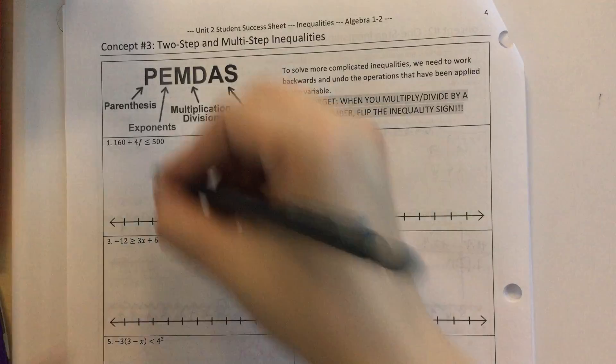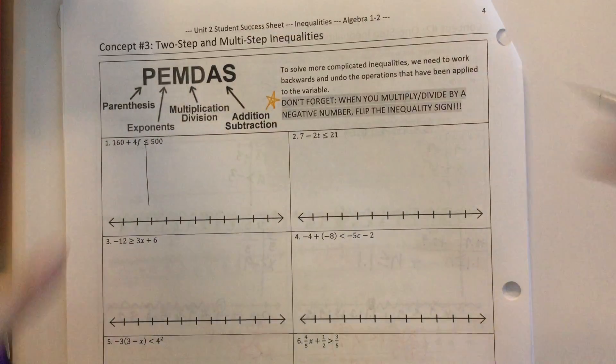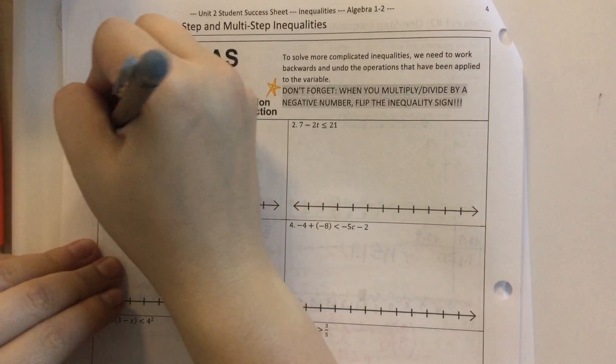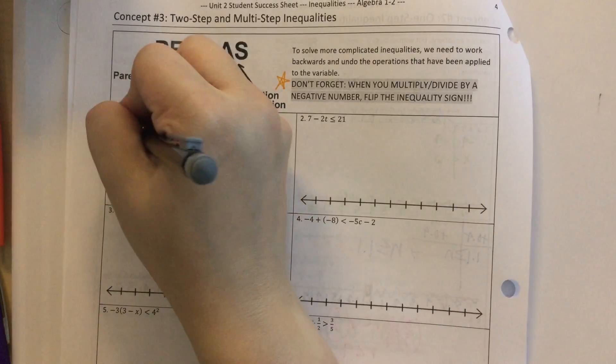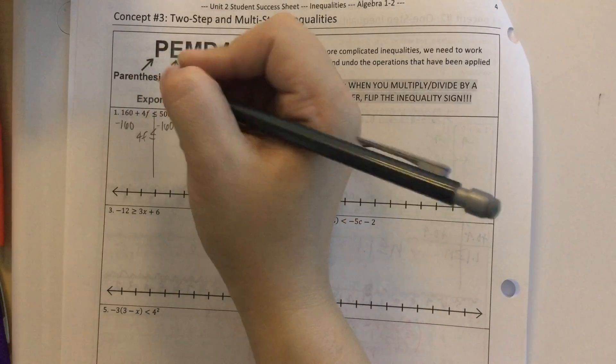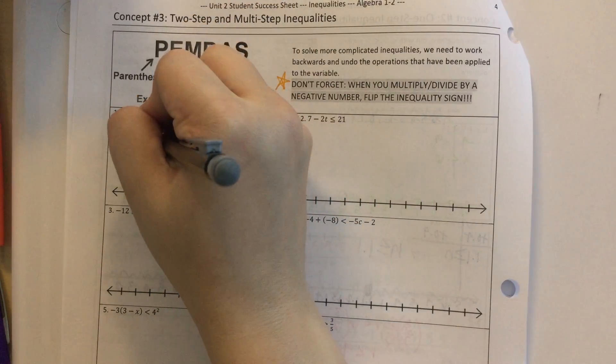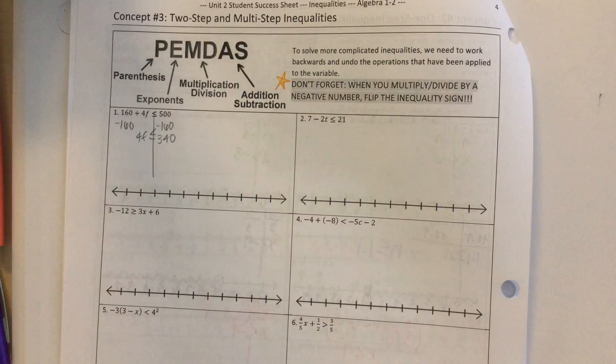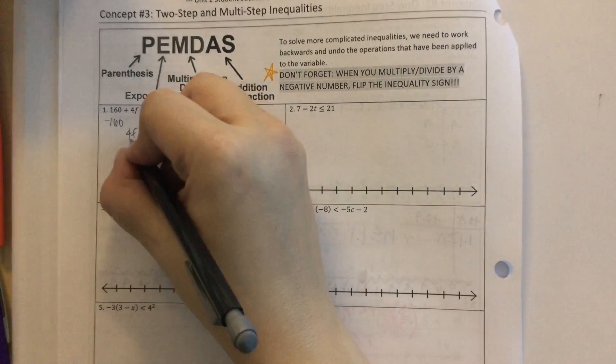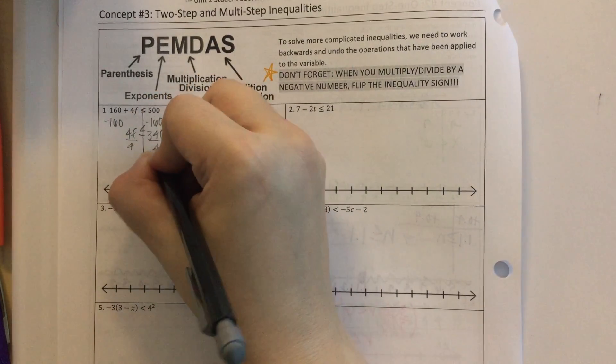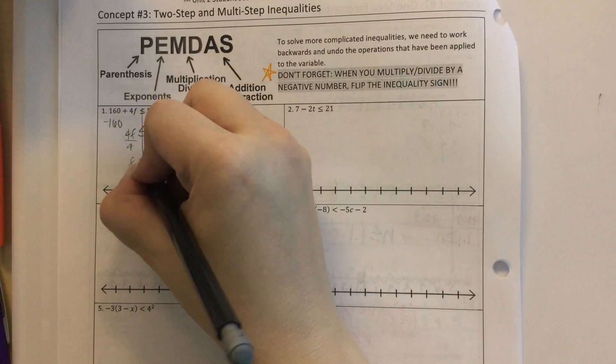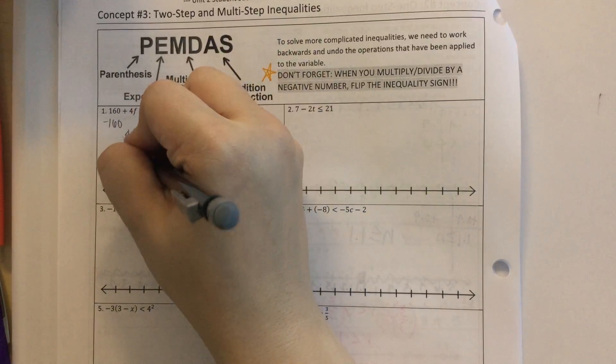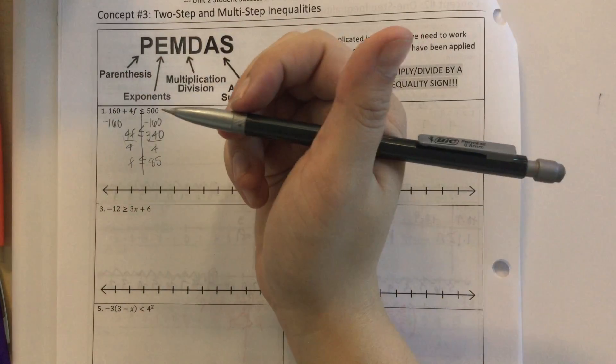So let's get started. Number 1, I want to get F by itself, so I'm going to subtract 160. Okay, so I have 4F is less than or equal to 340. And then I'm going to divide by 4. This is a positive number, so I don't need to flip, I just keep it the same. And I get 85. F is less than or equal to 85.